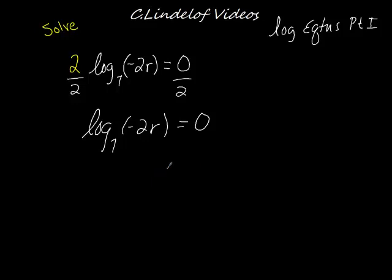From here, the second thing that we're going to try to do is we're going to exponentiate. Step 1, isolate the log. Second thing is exponentiate. So what we know about logarithmic functions is they can be turned into exponential functions. So it's this base to this power is equal to this thing. So 7 to the 0 power, 7 to the 0 power is equal to negative 2R.